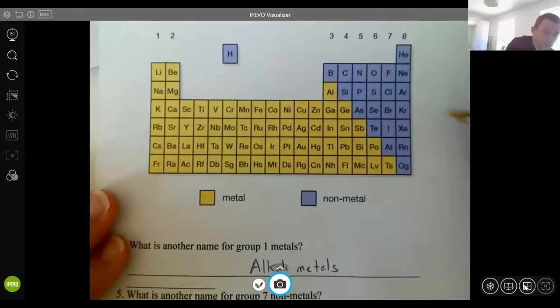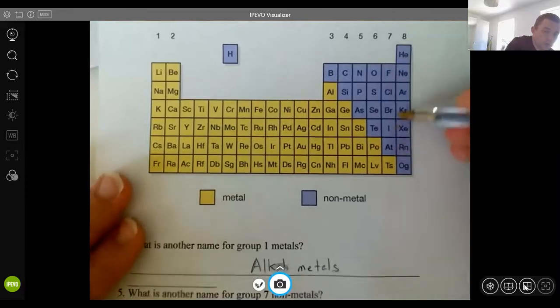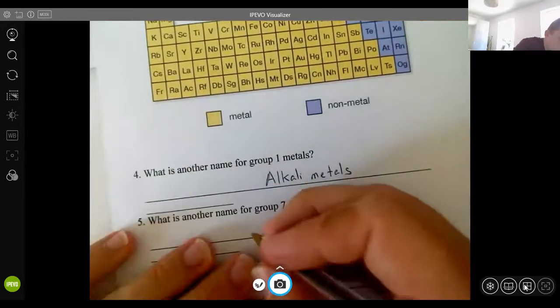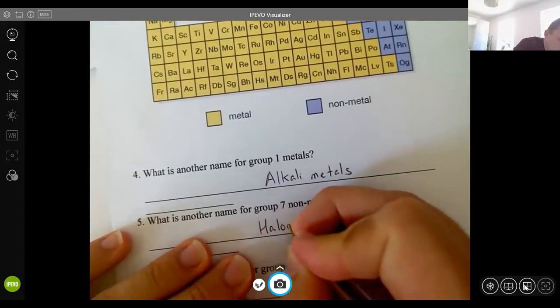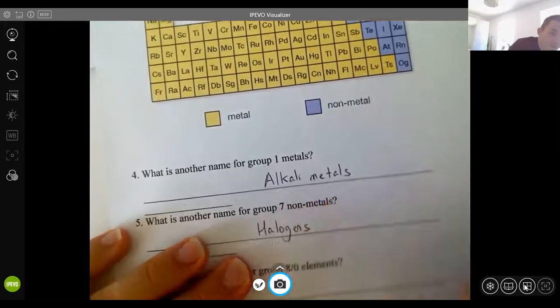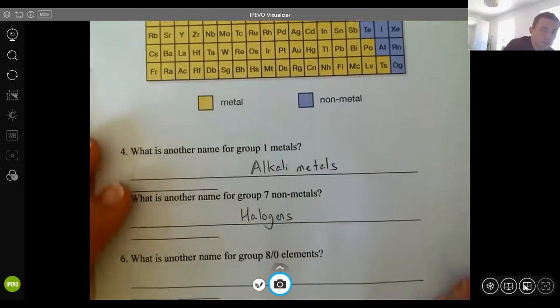Group seven, now group seven here, the non-metals, they are what we call halogens. They are very dangerous and toxic and nasty, actually, not very nice ones.